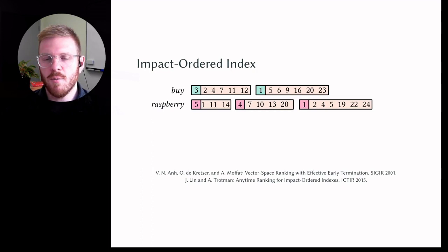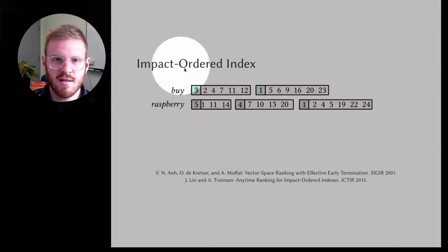There are different ways of storing inverted indexes. Here we have an impact audit index, and these already facilitate any time retrieval. What they do is they pre-compute the impact for every term in the index, and they organize the index by impact. For the term 'buy' here, there is a set of documents—document 2, 4, 7, 11 and 12—they have an impact of 3. Another set of documents have an impact of 1. If you do this for every term in the index, that allows you to process from highest to lowest impact, and you can terminate at any time.